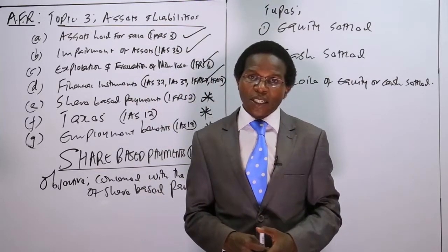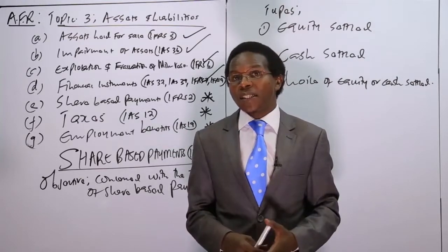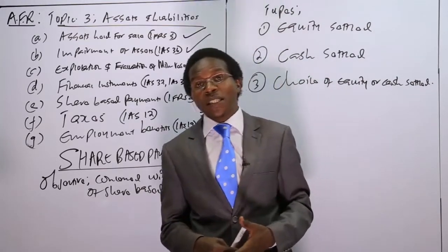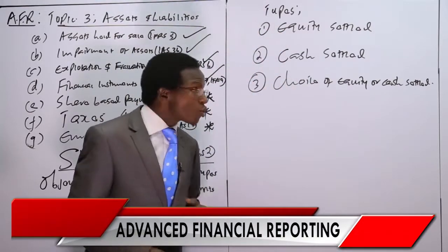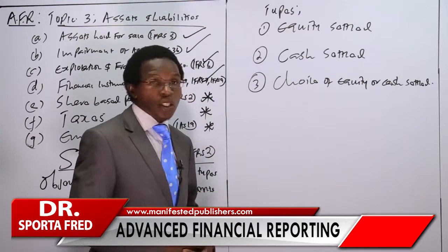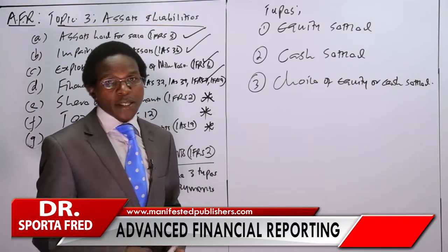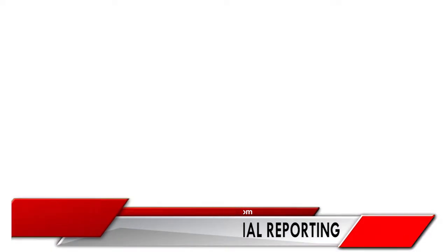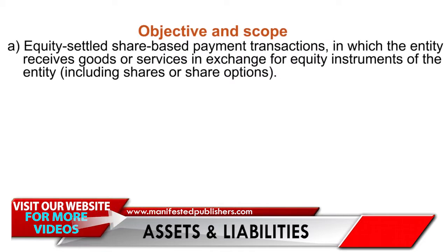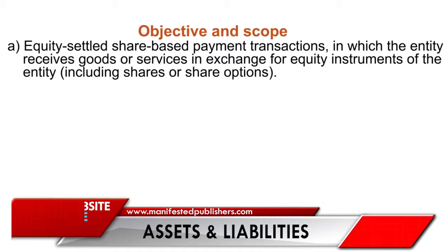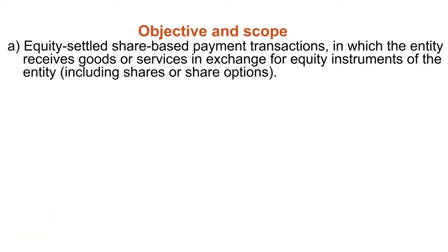That's important. This is one of the shortest standards. If you are able to remember the three types — equity settled, cash settled, and choice of equity or cash settled — that will be very important. An equity settled share-based payment transaction is one in which the entity receives goods or services in exchange for equity instruments of the entity, that is, shares. And there is also a choice between equity and cash settled.